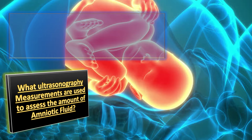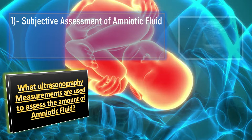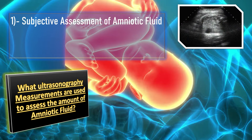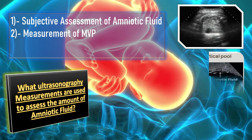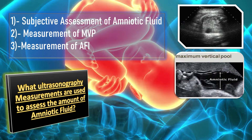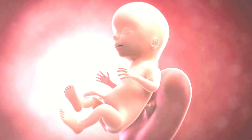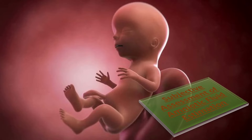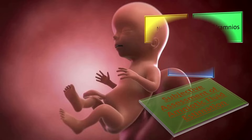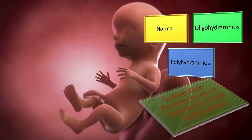There are three methods of measuring the amniotic fluid: subjective assessment of amniotic fluid, measurement of maximum vertical pool, and measurement of amniotic fluid index. By subjective assessment, we mean amniotic fluid evaluation along with biometry measurement, placing it into one of three categories: normal, oligohydramnios, or polyhydramnios.